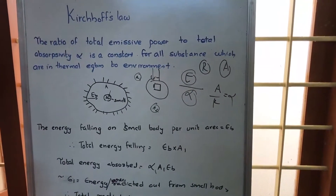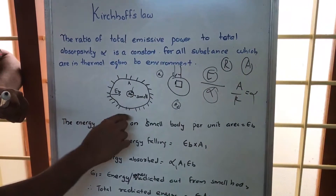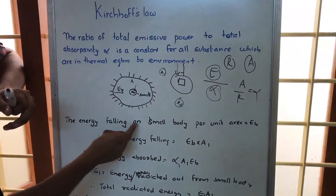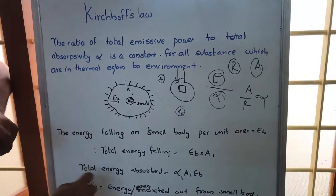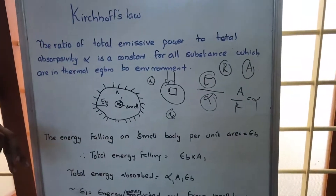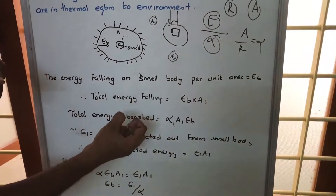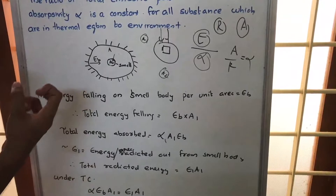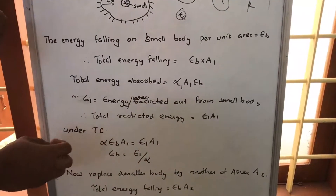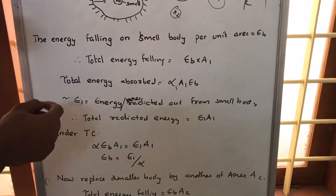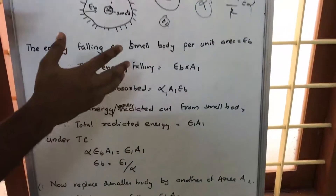For proving this, we have a small material of area A1, and the energy falling per unit area is Eb. So total energy falling on this small body is Eb times A1. Of this falling energy, a portion alpha will be absorbed, giving alpha times A1 times Eb as the energy absorbed by the small body. After absorbing it, this body will radiate out some energy. Let E1 be the energy radiated out per unit area, so total energy radiated out is E1 times A1.